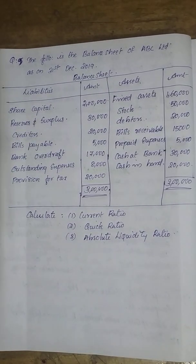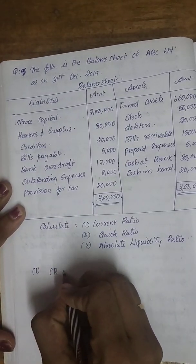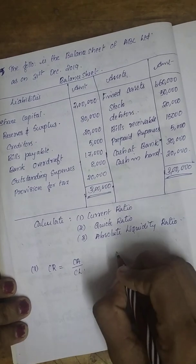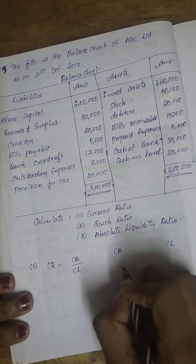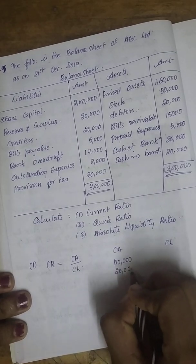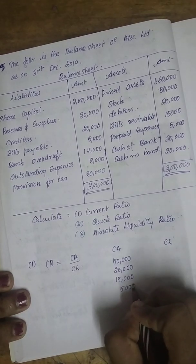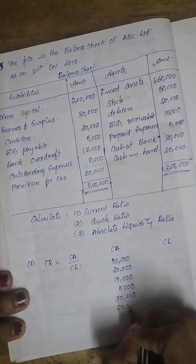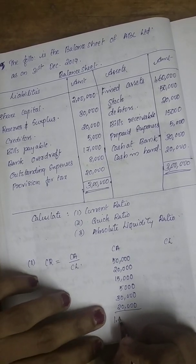First, we calculate the current ratio. Current ratio equals current assets divided by current liabilities. Current assets: stock is $50,000, debtors $20,000, bills receivable $15,000, prepaid expenses $5,000, cash at bank $30,000, and cash in hand $20,000.